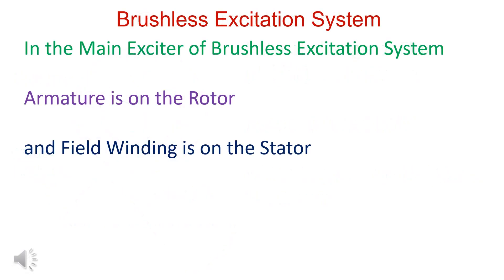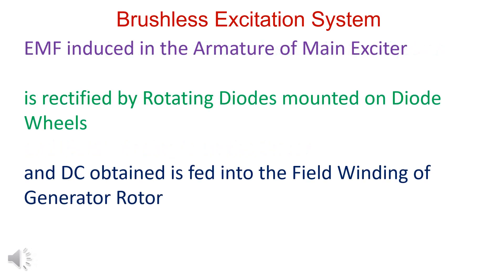In the main exciter of brushless excitation system, armature is on stator or rotor. Armature is on rotor. AC produced in armature is rectified by rotating diode bridge and DC current is fed into generator field winding.